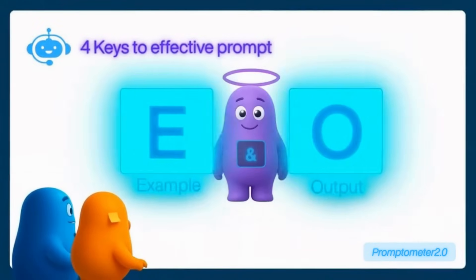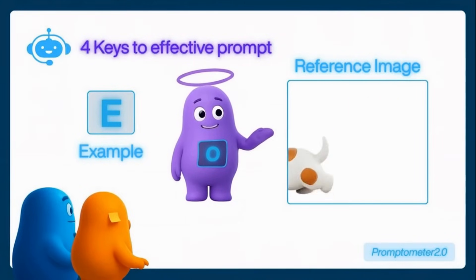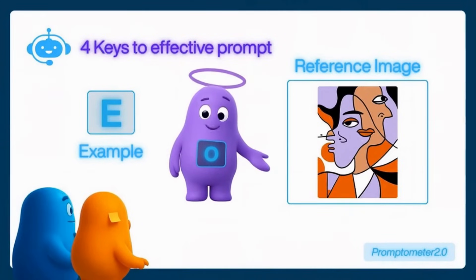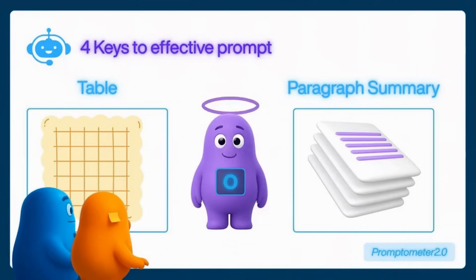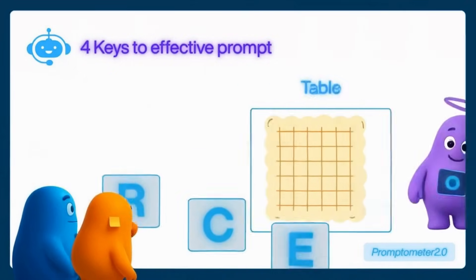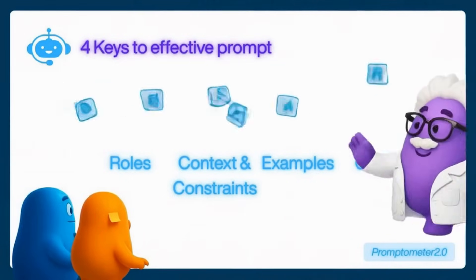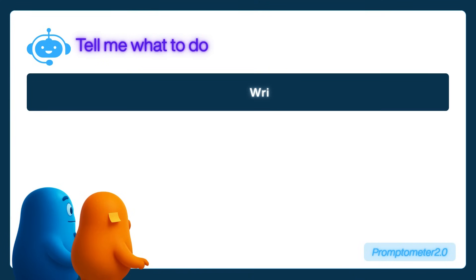Then comes examples and output. This is where you show it what good looks like. You can include a short sample, a bullet structure, or even a snippet of the writing style you like. Don't forget to specify the format you want, whether it's bullets, markdown headings, a table, or a paragraph summary. When you combine those three keys — role, context and constraints, and examples with output — you have the formula for powerful prompting.